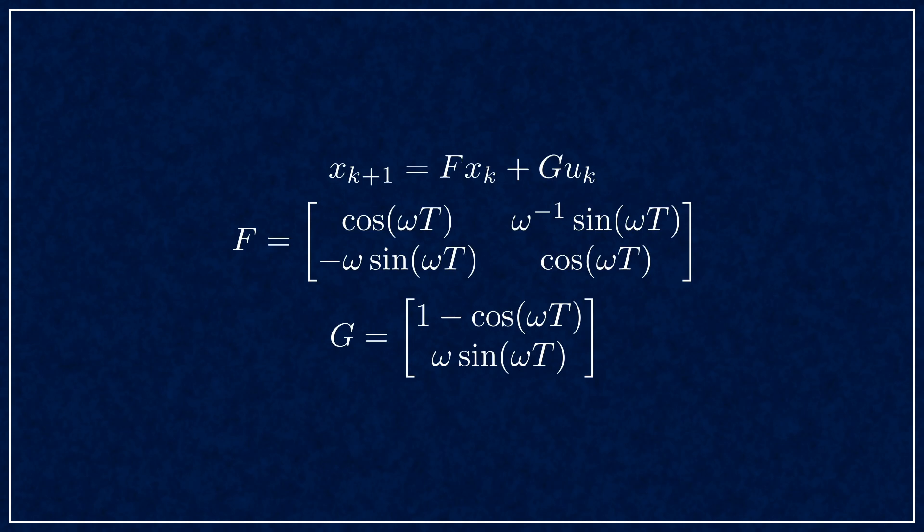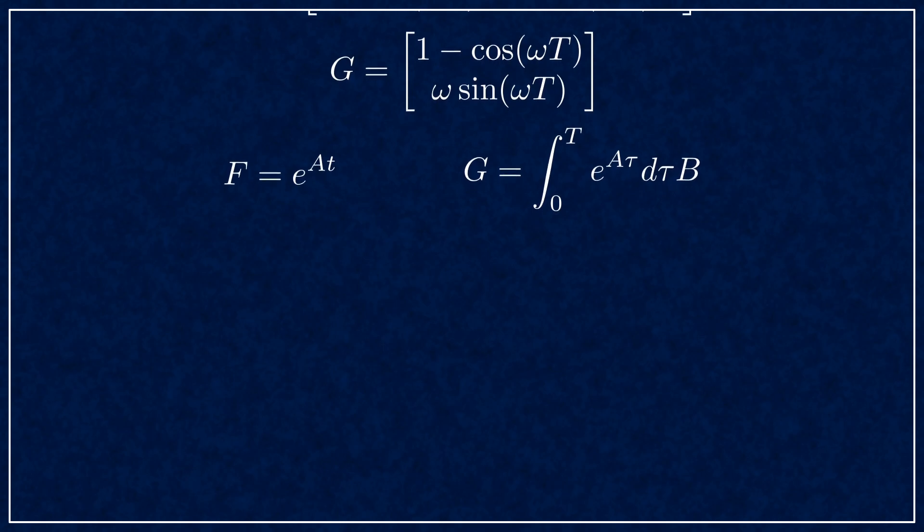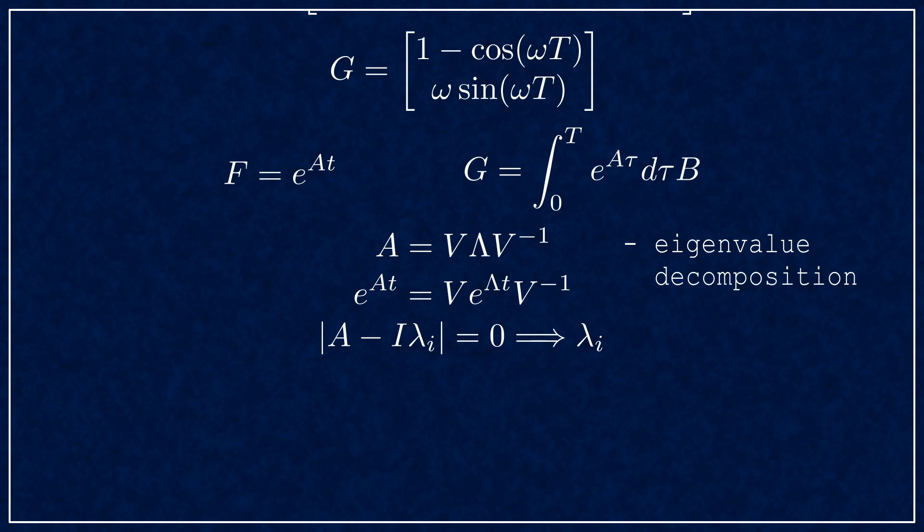So we just derived the discrete time state update matrices using the ODE solution. More generally, you can use matrix exponentials to derive these matrices. However, matrix exponentials are a kind of shorthand for the ODE solution. There are great algorithms to compute the matrix exponential numerically. If you want to stay symbolic, the way to go is to find the eigenvalues and eigenvectors of the A matrix, and that is more or less the same amount of work as just solving the ODE. For example, both include finding the same roots.